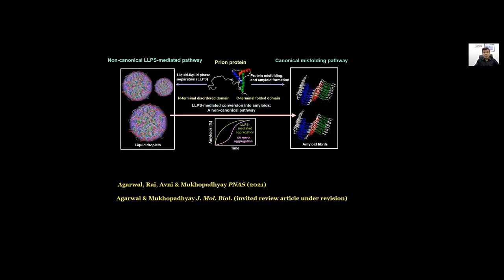To summarize, we think there are two alternate pathways for prion conversion. One is the canonical protein misfolding pathway by which there is a misfolding event and then aggregation giving rise to fibrillar architecture. The alternate pathway could be liquid-liquid phase separation and these liquid droplets can undergo liquid to solid phase transition to form amyloid fibers.